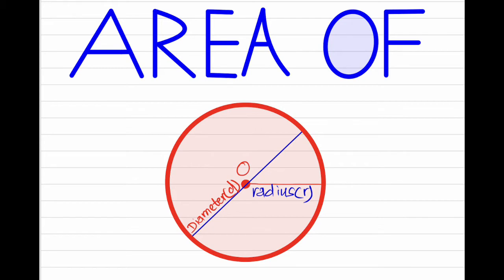In order to find the area, first of all, we must know the radius and diameter of a given circle.